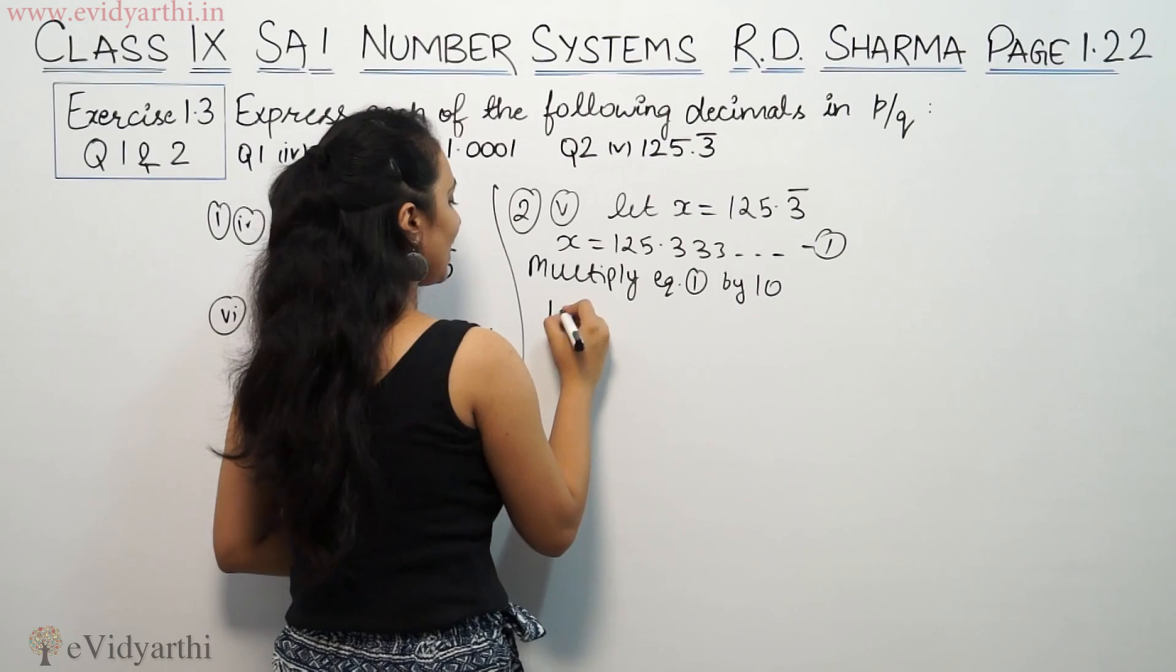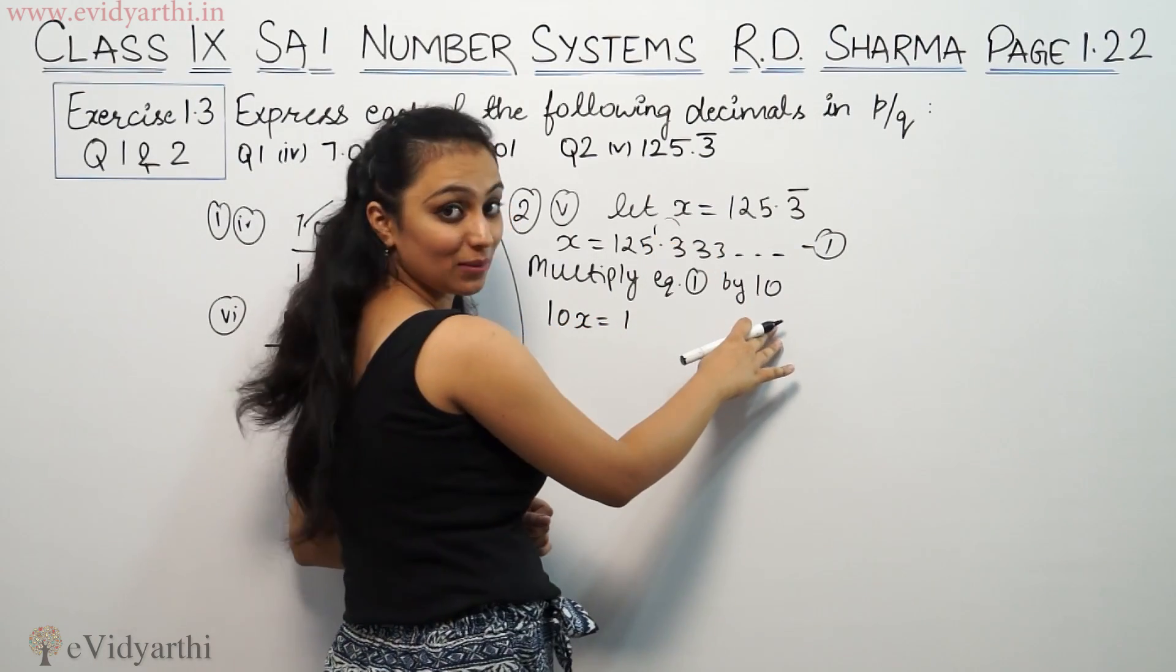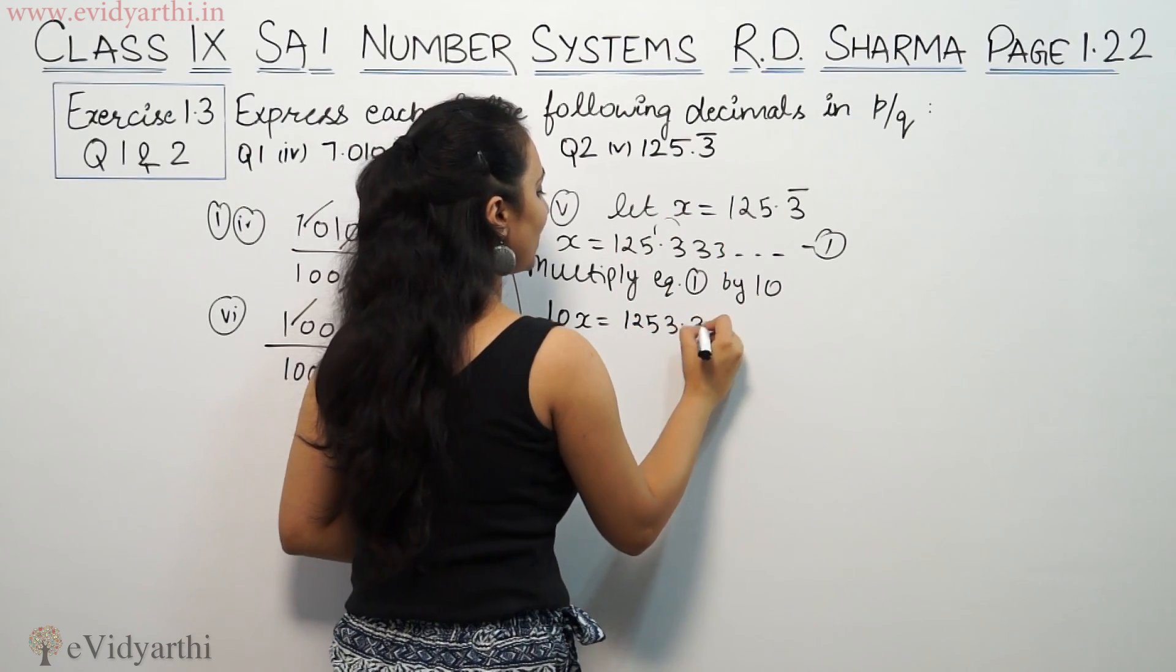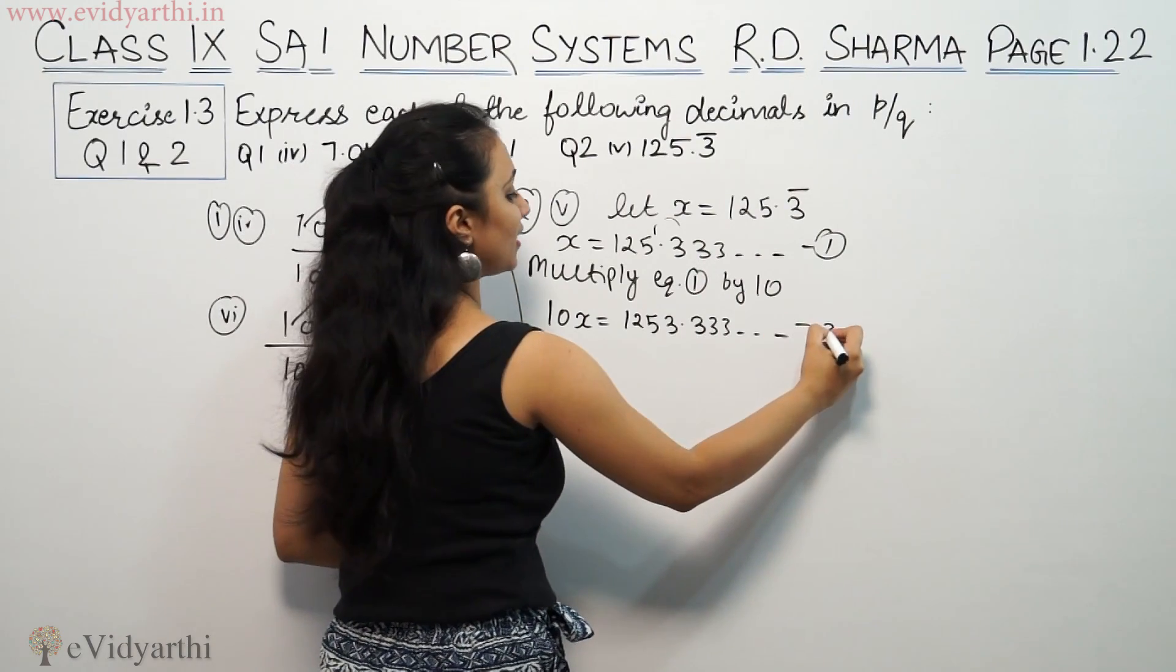In this case, we will multiply by 10. So 10x equals - when the decimal is multiplied by 10, it will shift. So it becomes 1253.333... This is equation 2.